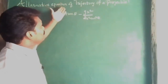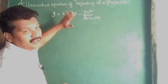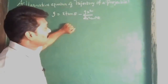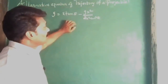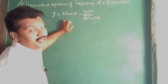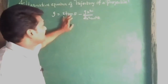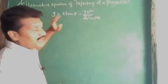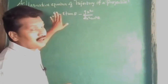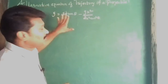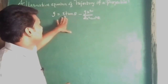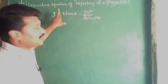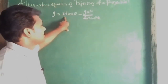Now we are going to see an alternative equation of the trajectory of the projectile. We are going to show the range, the vertical displacement, and the horizontal displacement.